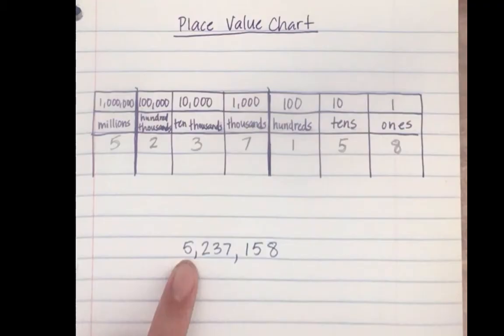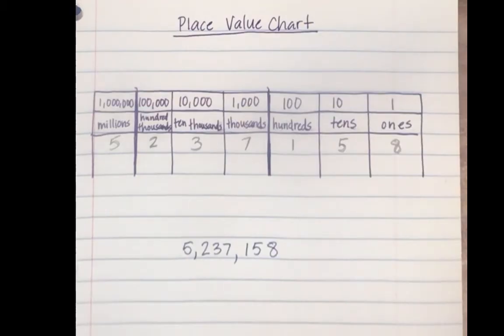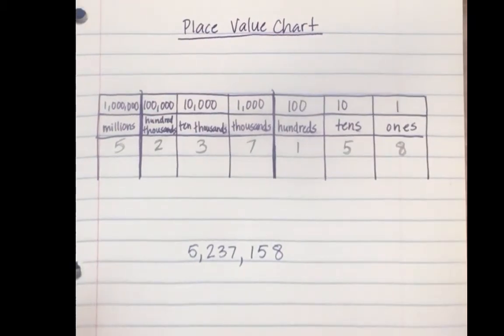Seven thousands equals seven thousand. Three ten thousands equals thirty thousand. Two hundred thousands equals two hundred thousand, and then five million. If we were going to write this in expanded form, it would look like this.